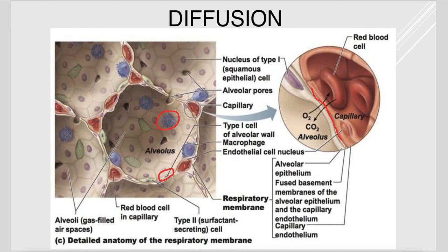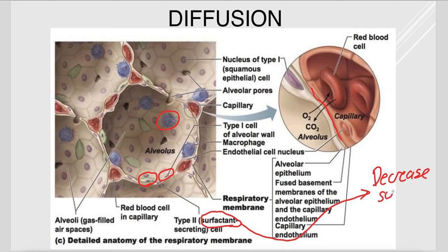There's another cell type called type 2 cells, which produce surfactant. Surfactant decreases surface tension — the attraction that water molecules have for each other. When surface tension is decreased, it helps the alveoli to stay open.